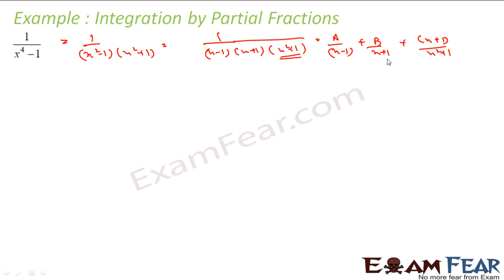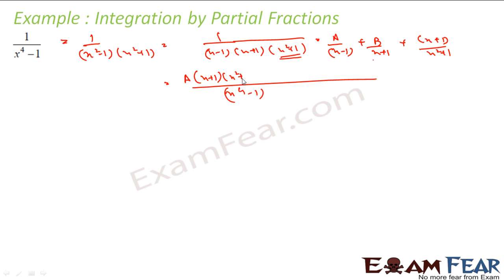Now we have to find the values of a, b, c, and d. This kind of factor we have to write in the form: a by (x minus 1) plus b by (x plus 1) plus (cx plus d) by (x squared plus 1). So we can write: 1 equals a into (x plus 1) into (x squared plus 1) plus b into (x minus 1) into (x squared plus 1) plus (cx plus d) into (x squared minus 1).